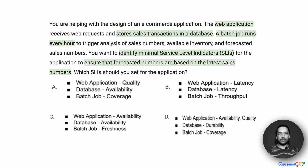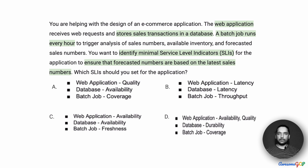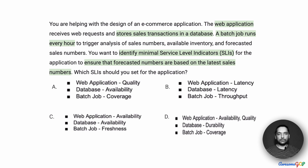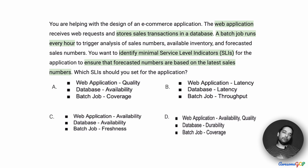The key parts of this requirement are that there is a web application. Via the web application, data about sales transactions at the store are stored in the database. Every hour, a batch job is going to run that will create a bunch of reports. We have to ensure that the reports generated and the forecasted numbers in them are based on the latest sales numbers. To do this, we have to identify the Minimal Service Level Indicators. There are a whole bunch of them and we shall go through each and figure out if they qualify to be a good SLI or not.